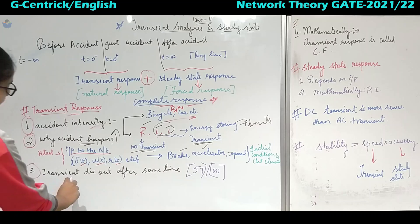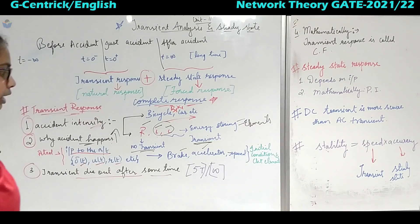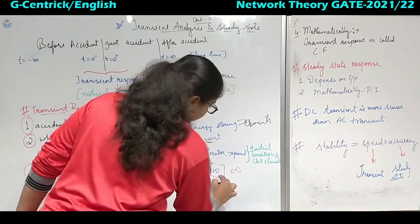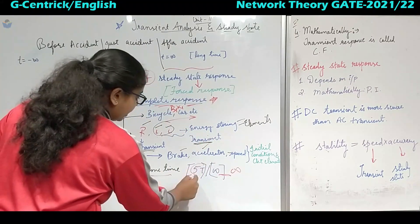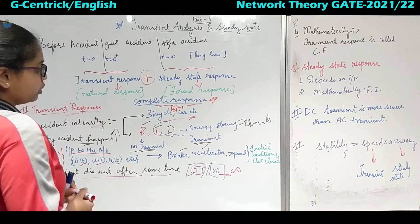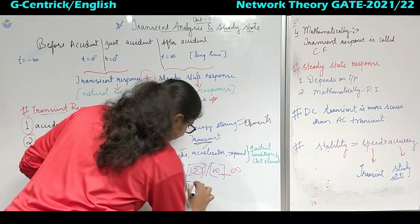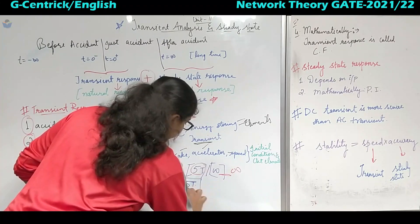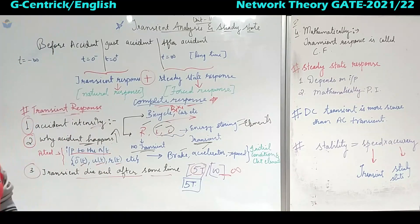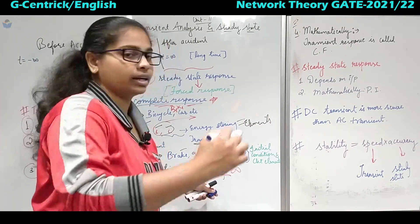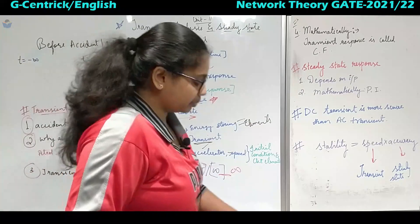Transient dies out after some time. Theoretically it will never die out — it will be infinite. But practically, it is 5 times the time constant. The time constant will come mostly in the control system. So practically, after 5 times the time constant, the transient will die out. But theoretically, it will continue till infinity and won't die out. That is the third point.